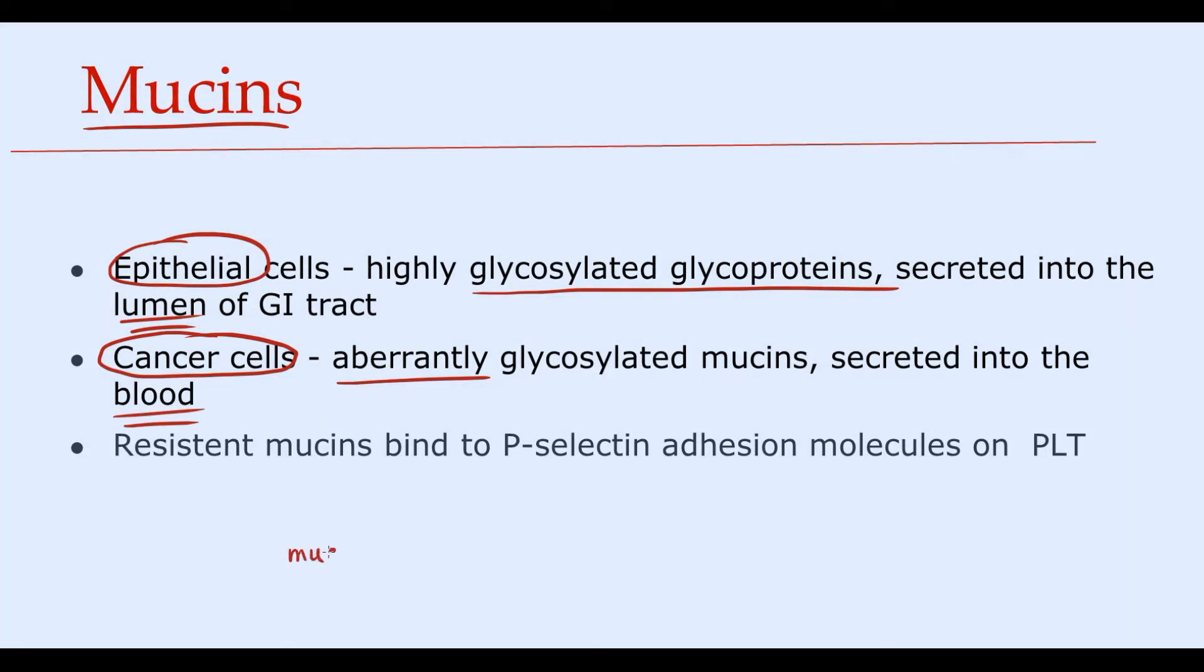And once these mucins enter into the circulation, most of them are taken up by the liver. But some portion of them are resistant to liver clearance, so-called resistant mucins.